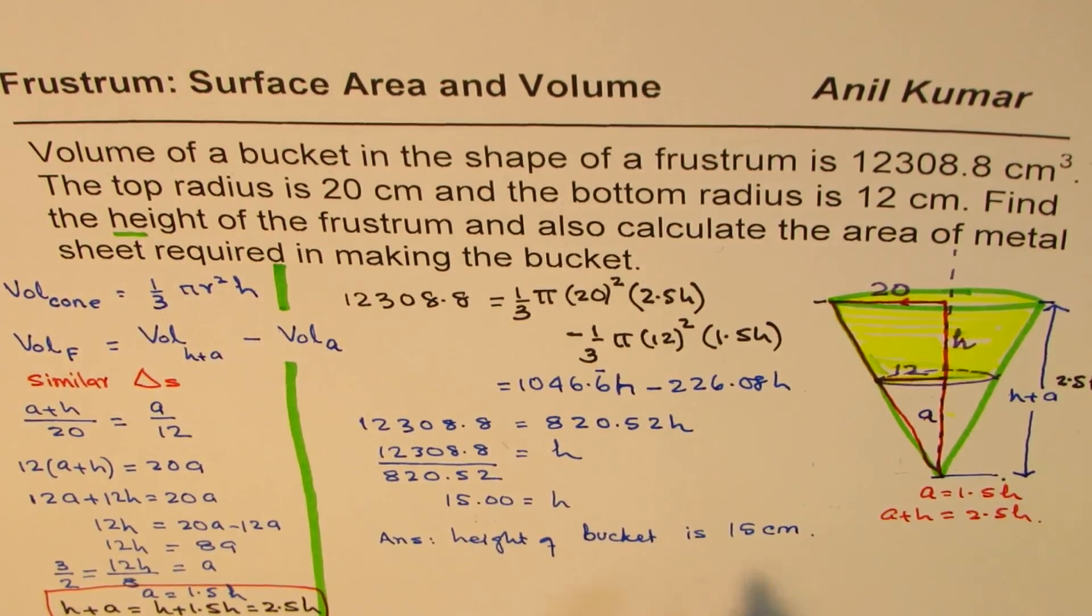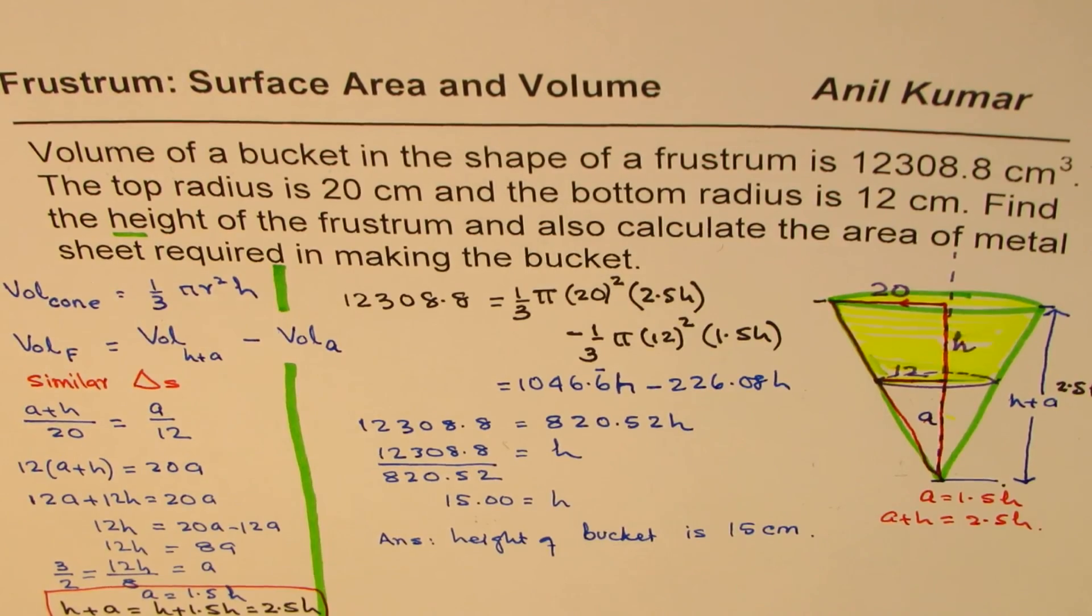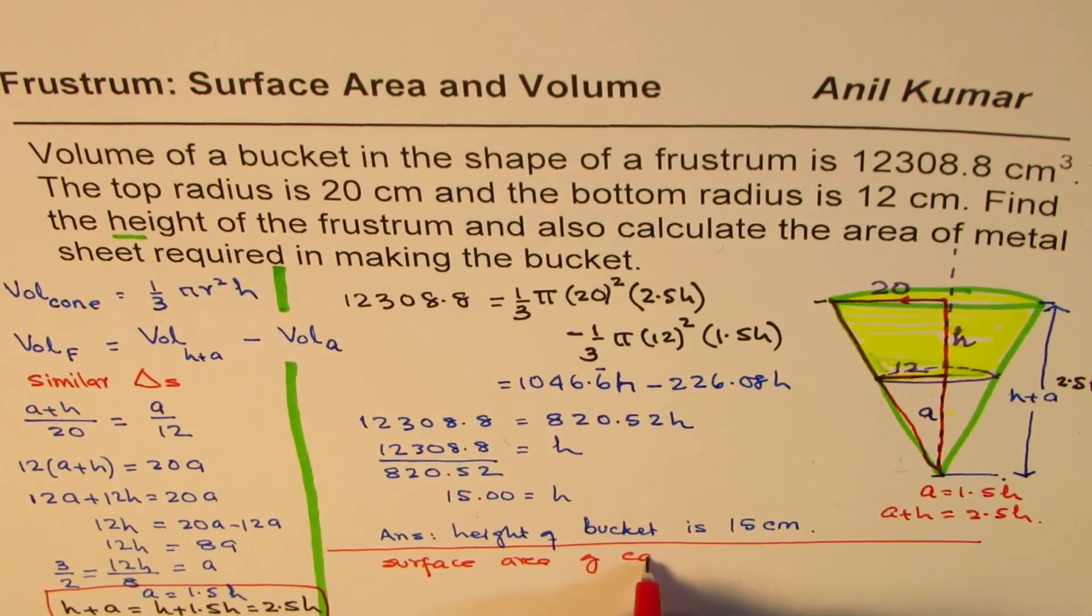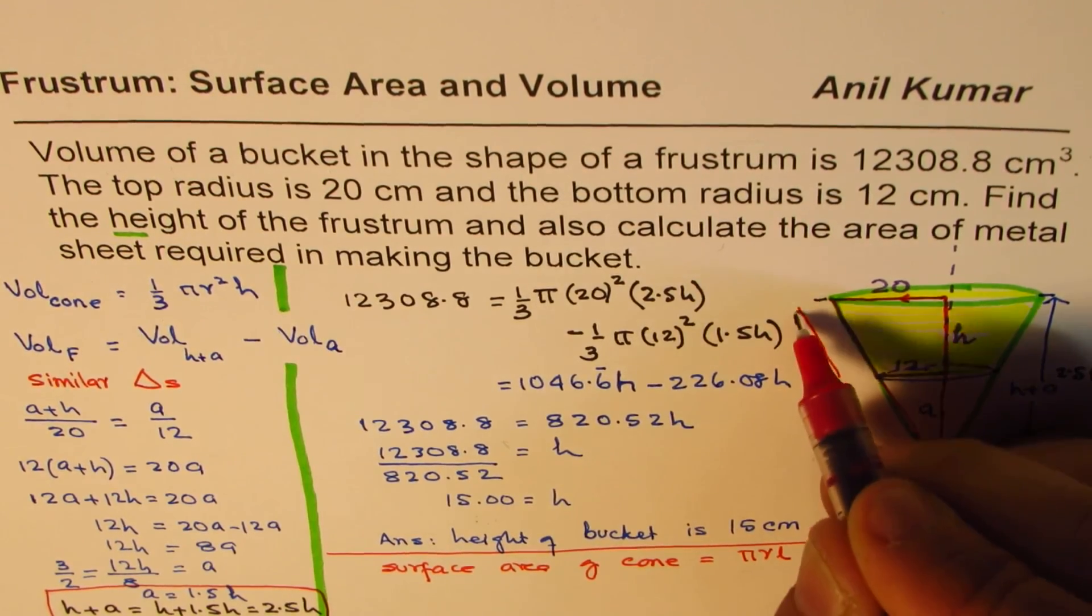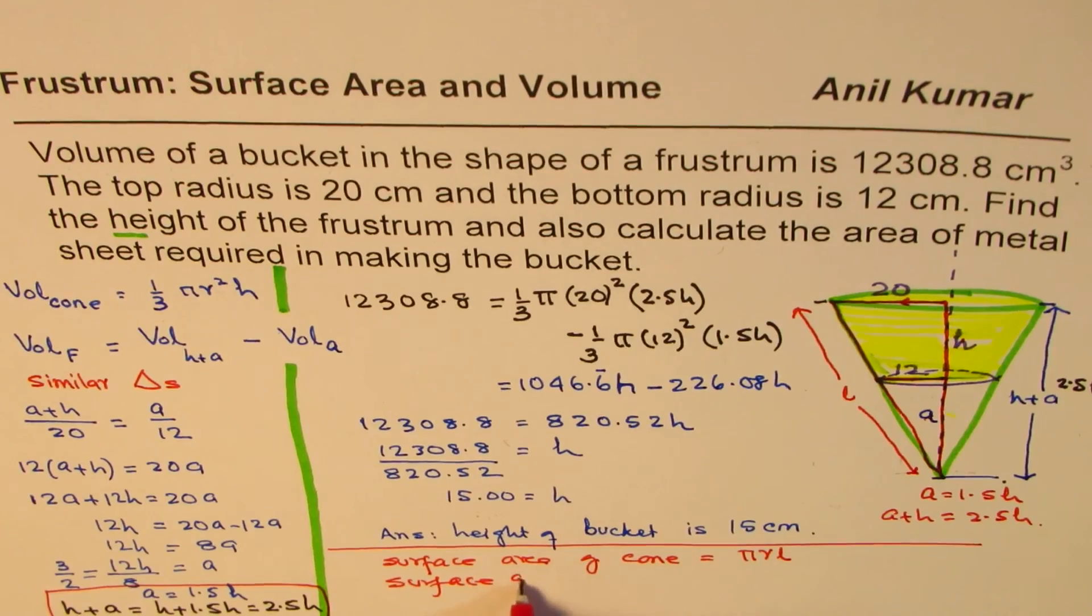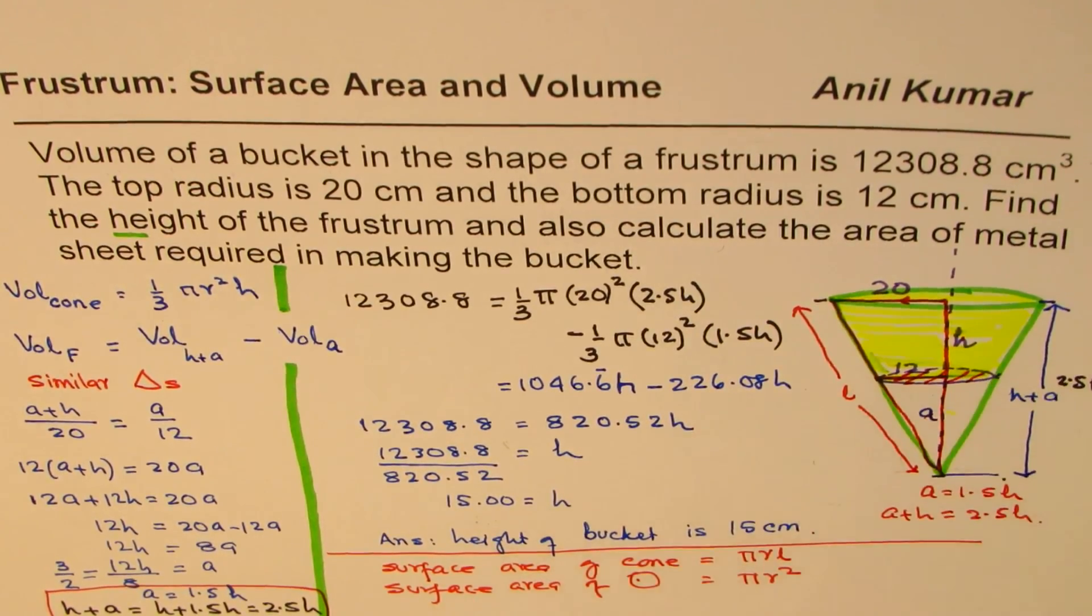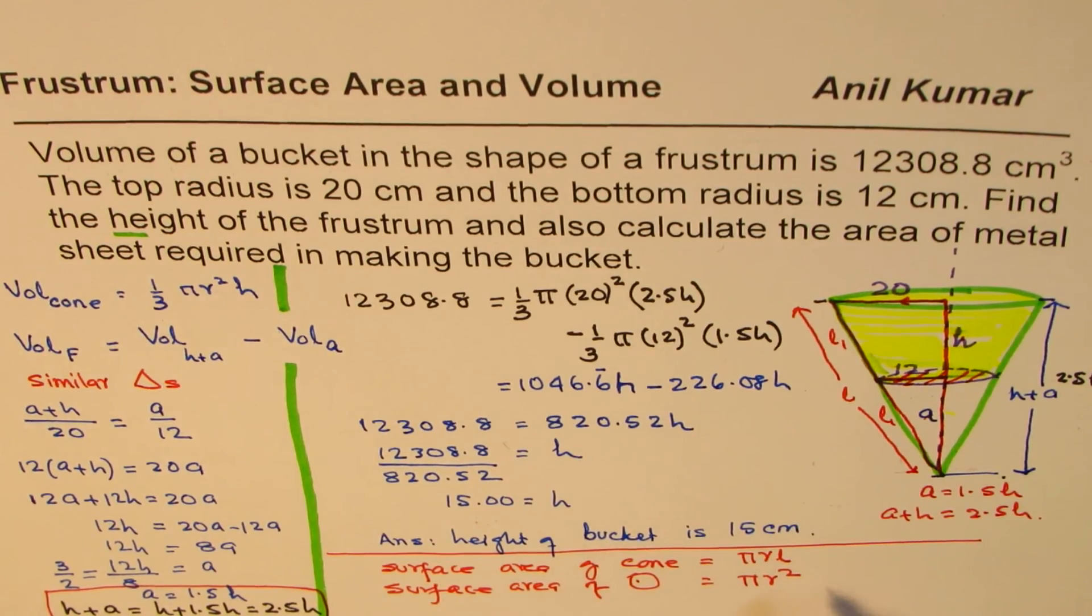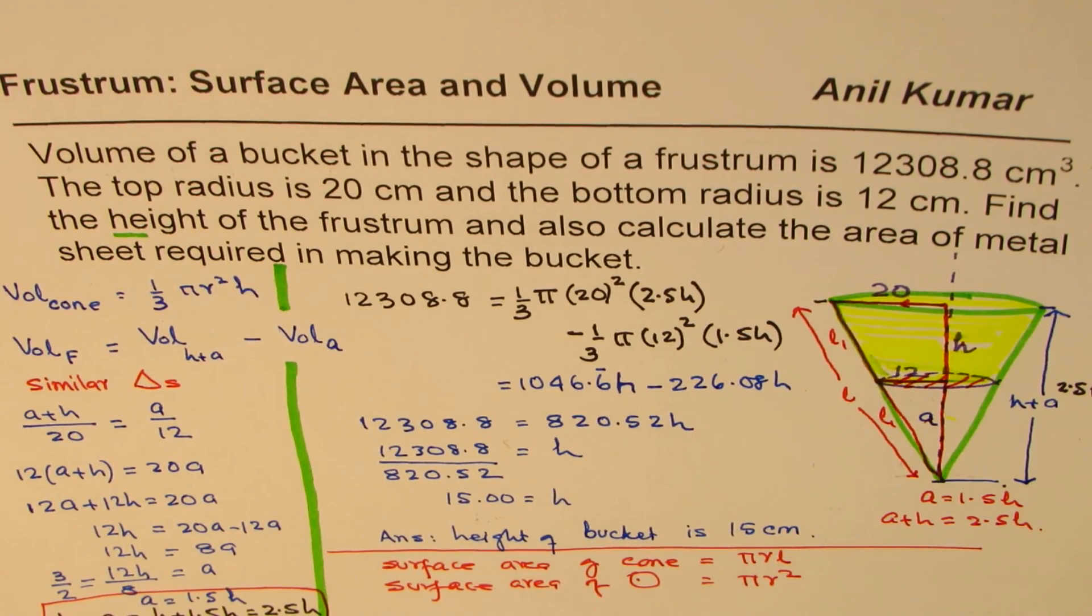You can actually try the later half also, which is calculating the area of the metal sheet. For metal sheet area, I am not solving, but I'm giving you a formula here. Surface area of cone equals πrL, where L is the slant height. So the surface area of cone is πrL, and surface area of circle is πr². You need the bottom, this portion. So add these two. You need to find this take away, just as we did here. Using these formulas, you can do the later half also. Try it out, and I will provide you with a link. I actually modified the question, saying if the height of the bucket is 15, then what metal area is required. That is the modified question, which we will take up in the next video.